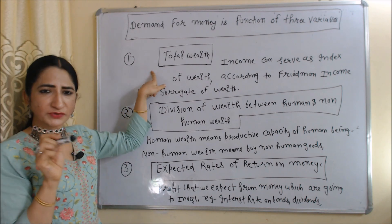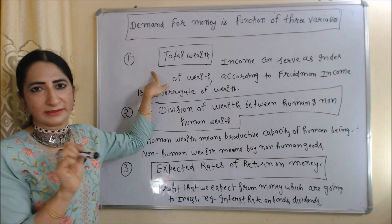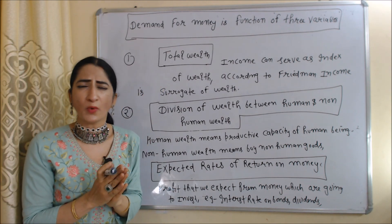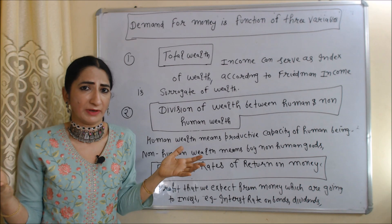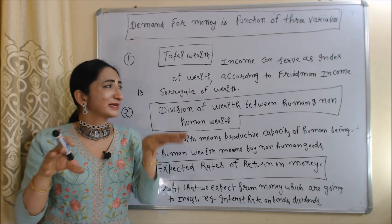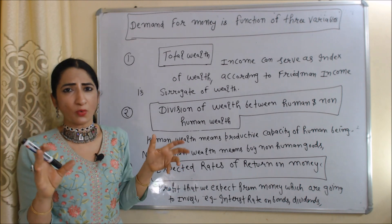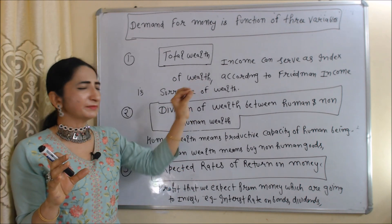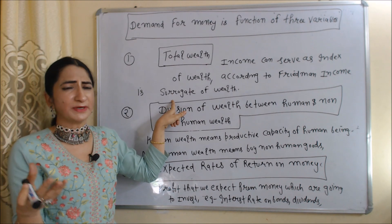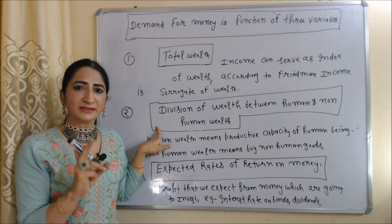The first and most important variable that affects our money demand is total wealth. In reality, estimation of total wealth is not easily available because we invest our money in so many things. That's why income can serve as an index of wealth. According to Friedman, income is a surrogate of wealth — in place of wealth, we can use income.